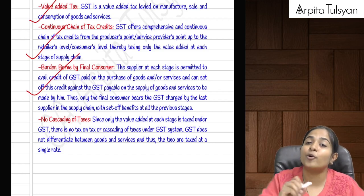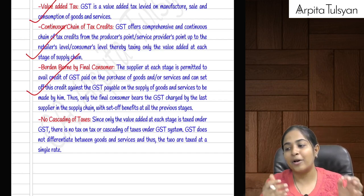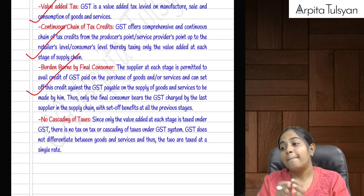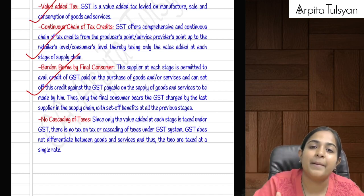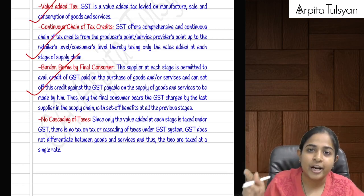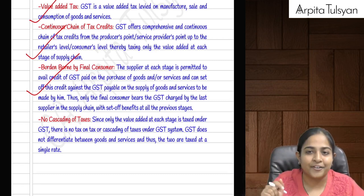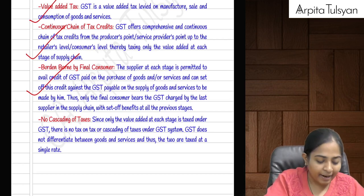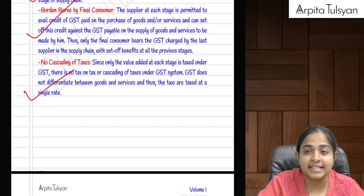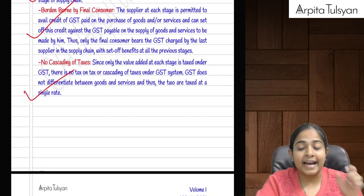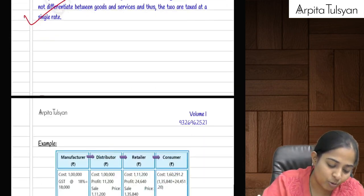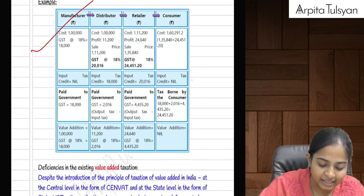Ultimately the final tax will be borne by the ultimate consumer who is not going to sell it further — who is going to consume it. At all earlier stages credits were available, but the amount will ultimately be borne by the consumer because he is not going to sell further, so the chain breaks there. This ensures there is no cascading effect of taxes — only the value added at each stage is taxed.